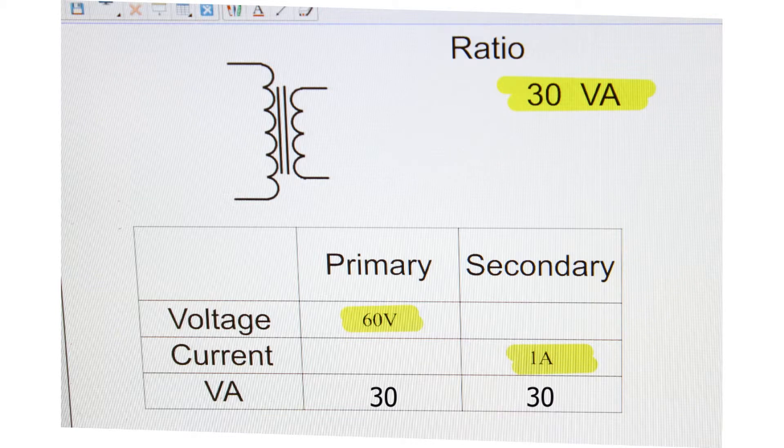We can see the 30 VA rating for the secondary. We can put that for the primary and secondary. To figure out the current on the primary, we take the volt amps, divide by 60 volts, and come up with 500 milliamps. To figure out the secondary voltage, we can do 30 divided by 1 amp to come up with 30 volts. 60 volts on the primary, 30 on the secondary, that's a 2 to 1 ratio.